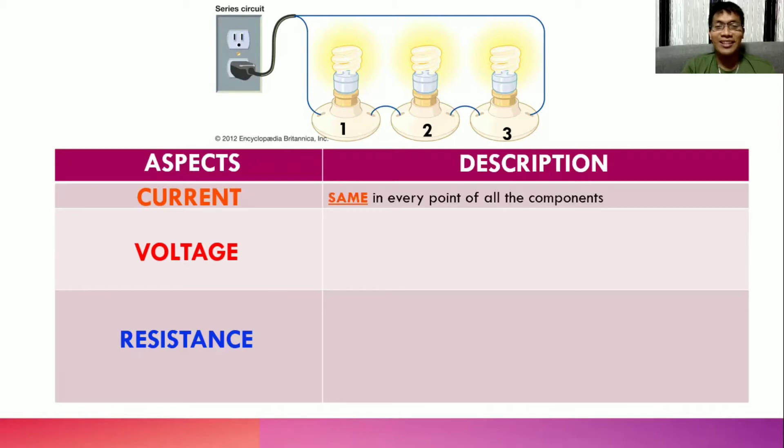For its current, we have to take note that it is always the same in every point of all the components. Using this illustration, we got three bulbs and we labeled them as 1, 2, and 3. If bulb 1 has 3 amperes, remember the unit for current is ampere, we will expect that bulb 2 also has 3 amperes and the current in bulb 3 is 3 amperes as well. In series connection, the current is always equal or the same in all of its components.